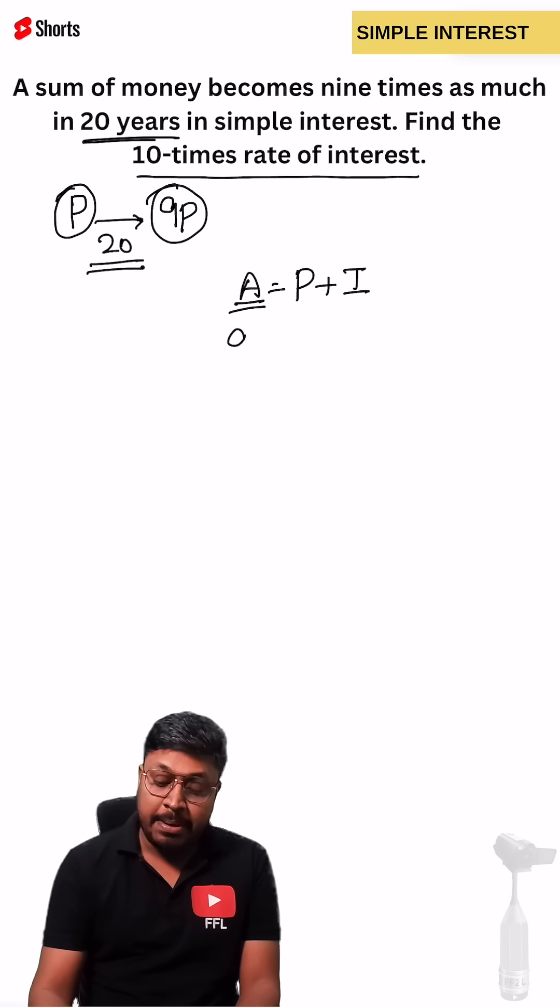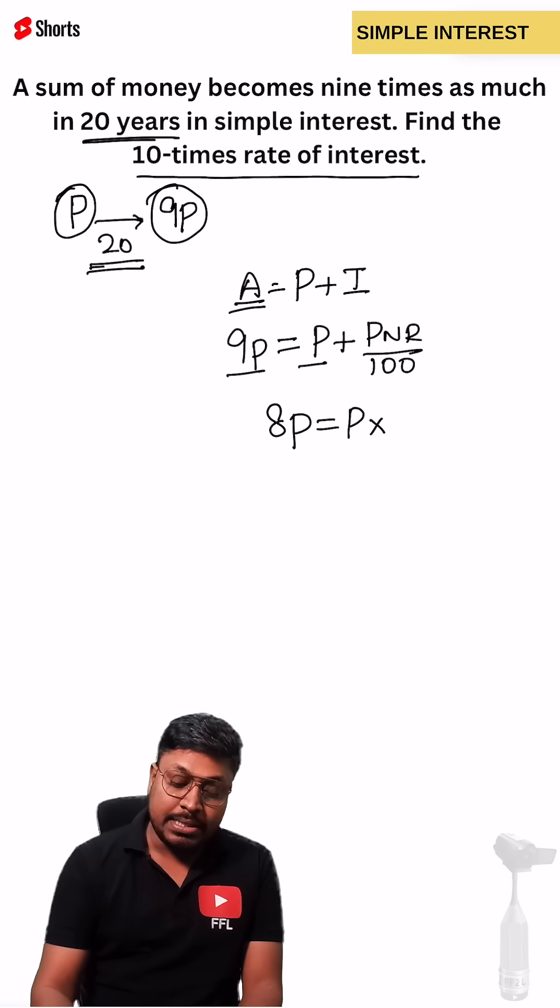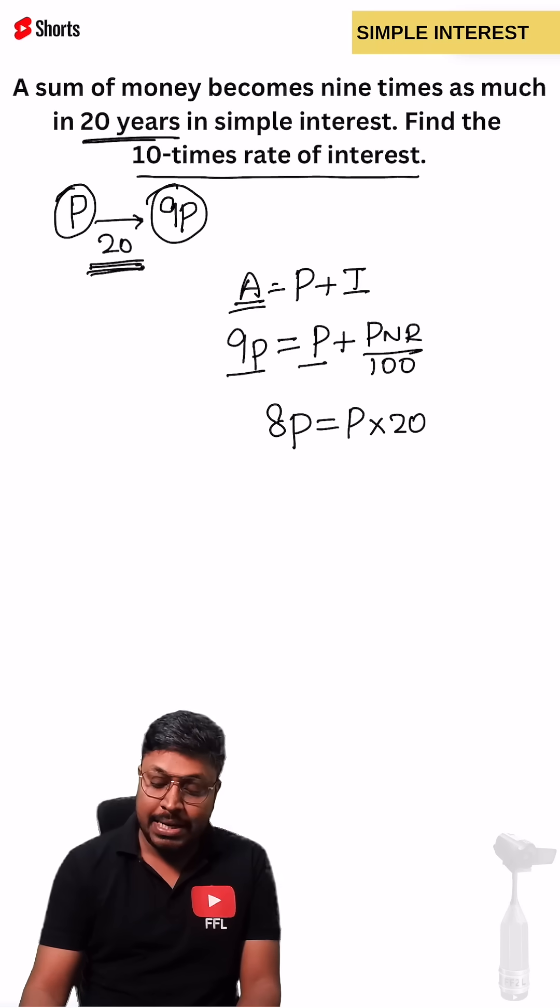So overall amount becomes nine times the principal. So principal what they invested is P. What about interest? PNR divided by 100. So 9P minus P will be 8P equals to principal. Number of years is directly given in the question which is 20 into R divided by 100.